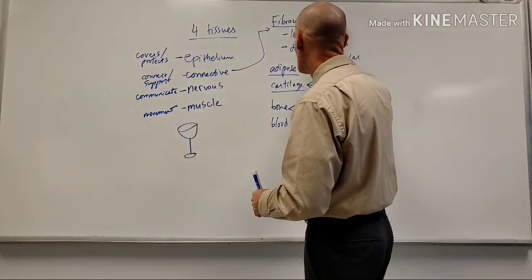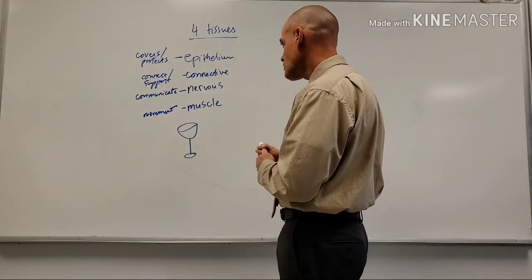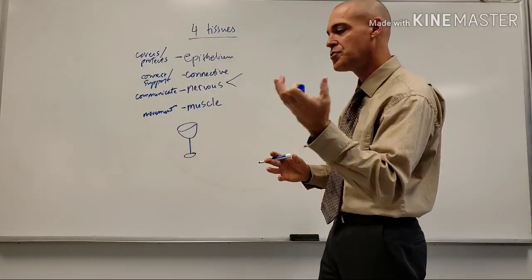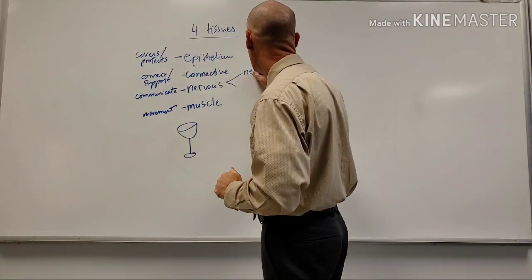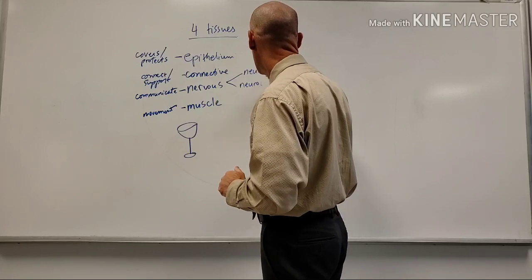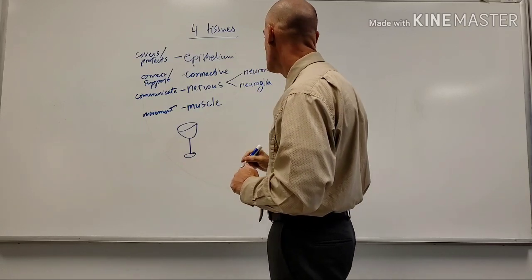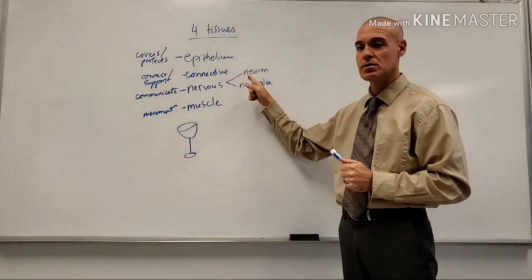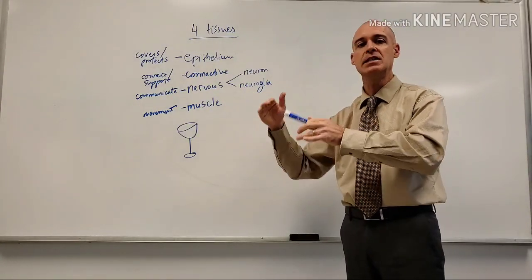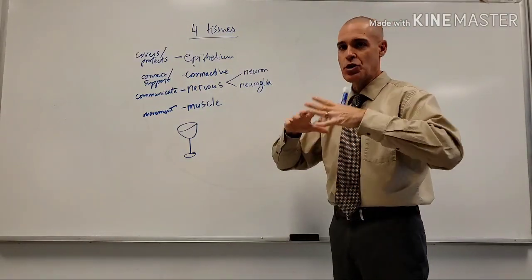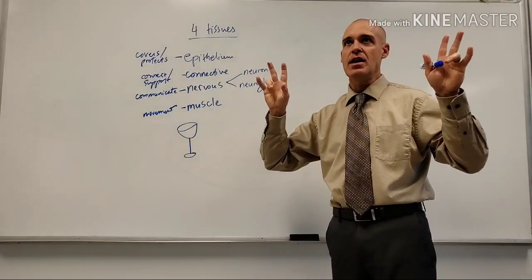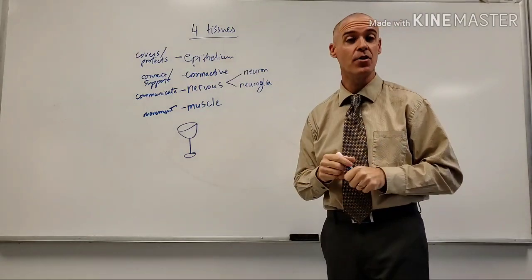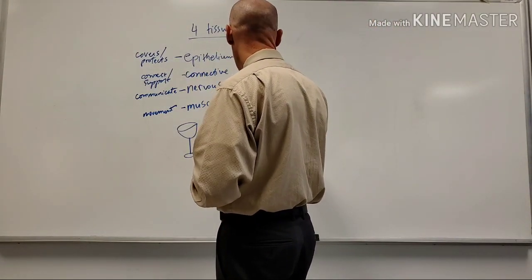Nervous tissue is relatively straightforward. There are really two basic parts: the neuron and the neuroglia. The neuron sends signals - it's responsible for sending signals. The neuroglia actually outnumber the neurons and function to protect and assist the neuron; they're the housekeepers for the nervous system. Both are needed for the nervous system to function properly.